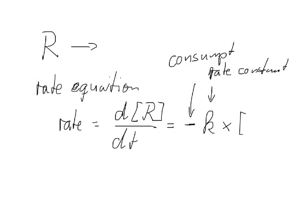So I write it as minus k — this is a rate constant — times the concentration of the reactant. Sometimes we put a little one here, and this indicates that it is a first-order reaction.